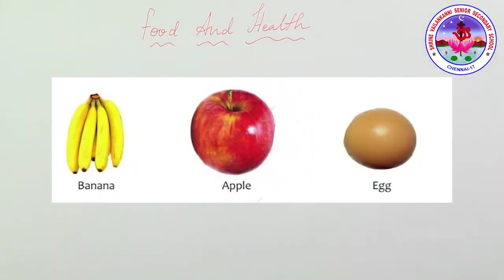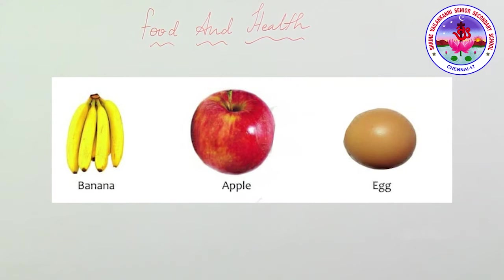Elders tell us to eat a lot of fruits and vegetables because they contain iron. If the food we intake doesn't have iron, a disease called anemia will occur. A person suffering from anemia has low hemoglobin content in the blood. Hemoglobin is a substance in the blood that carries oxygen. Anemia patients feel very sick often and always look very tired.